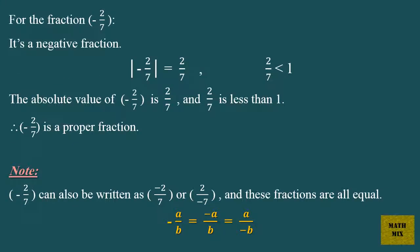For the fraction minus 2 over 7, it's a negative fraction. The absolute value of minus 2 over 7 is 2 over 7, and 2 over 7 is less than 1. Therefore, minus 2 over 7 is a proper fraction. Note: minus 2 over 7 can also be written as minus 2 over 7, or 2 over minus 7, and these fractions are all equal.